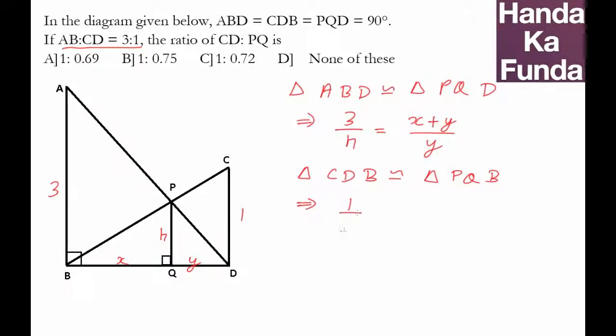Big triangle, the height of big triangle by height of small triangle is 1 upon h. And very similarly, base of big triangle, that is x plus y again, upon the base of small triangle PQB is x.